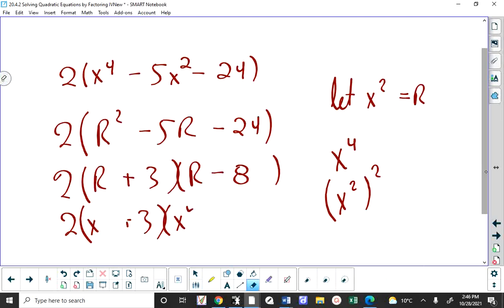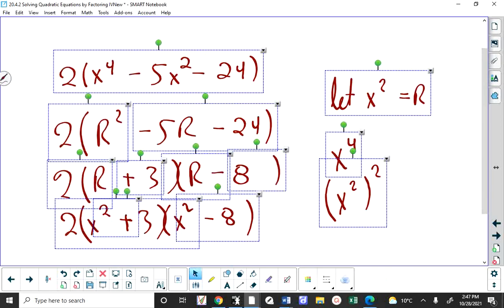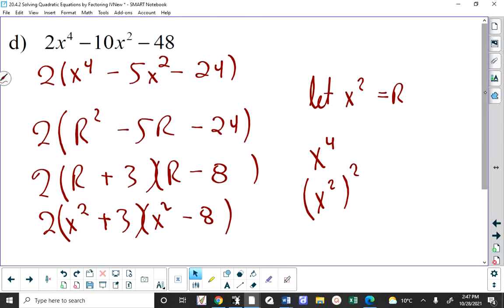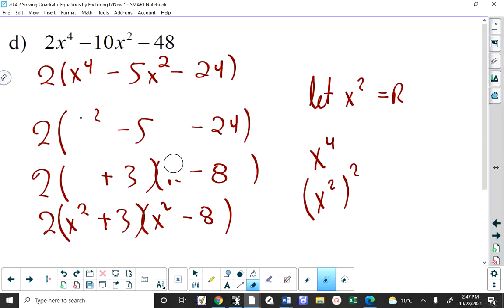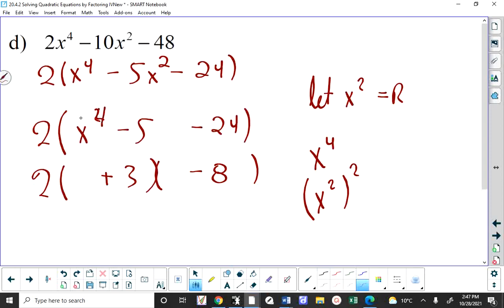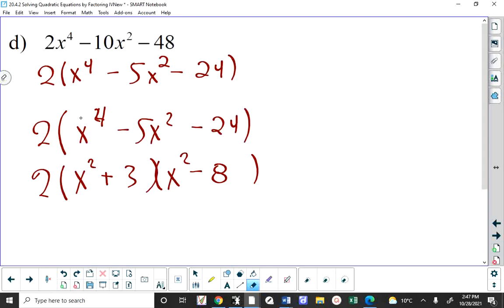And then you throw the x squared back in. So those of you that did not need to use the r, how many of you were successful? That's good. That's like at least three quarters of you.